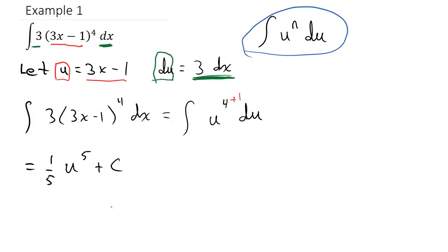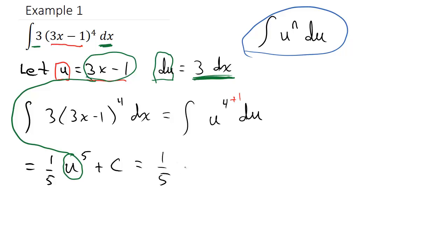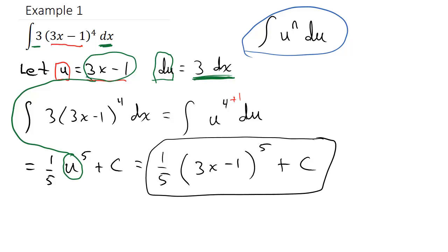Now I have to get the answer back in terms of x — I can't leave it in terms of u. So I put (3x minus 1) back in for u. That gives me (1/5)(3x minus 1) to the 5th power, plus c. That's my answer.